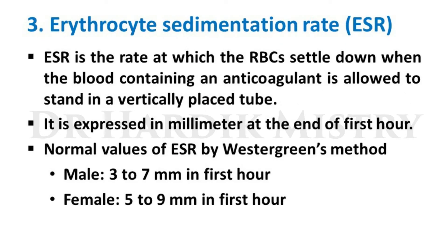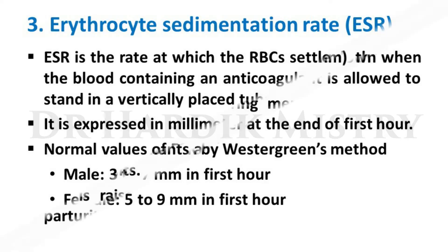Erythrocyte sedimentation rate, also known as ESR, is the rate at which RBCs settle down when blood containing an anticoagulant is allowed to stand in a vertically placed tube. It is expressed in millimeters at the end of the first hour. Normal values by the Westergren method: male 3 to 7 mm in the first hour; female 5 to 9 mm in the first hour.